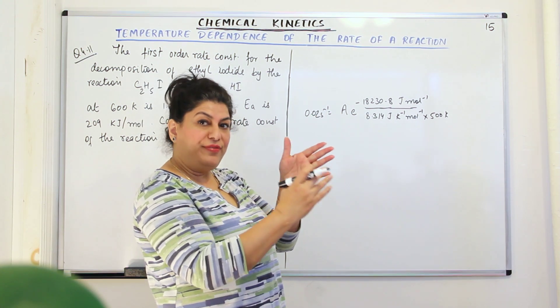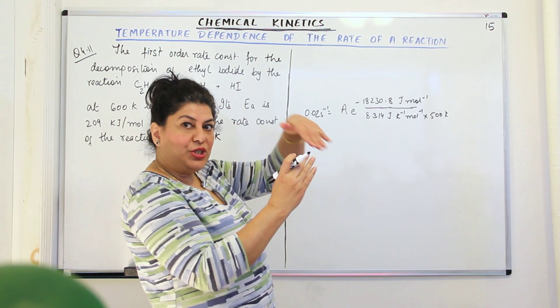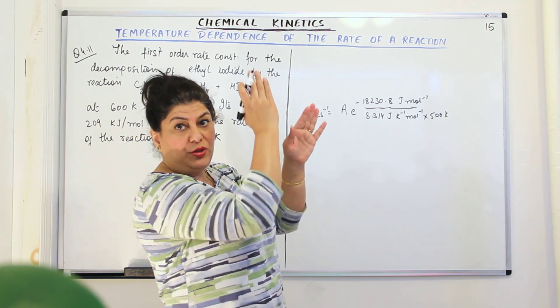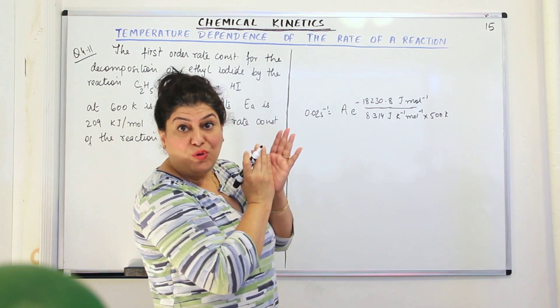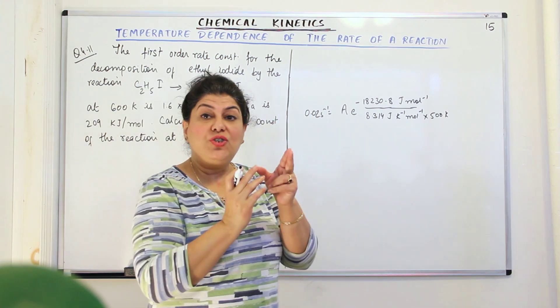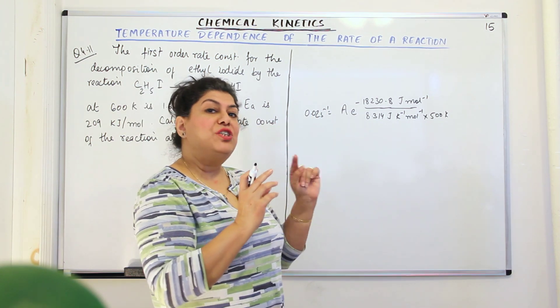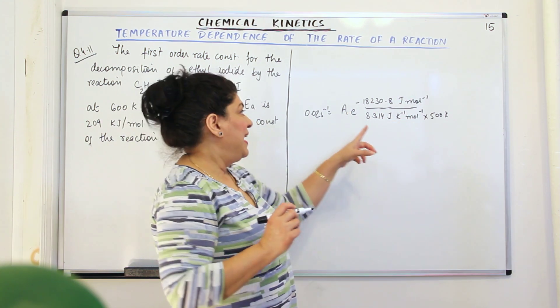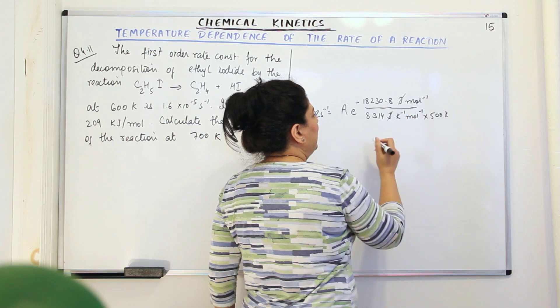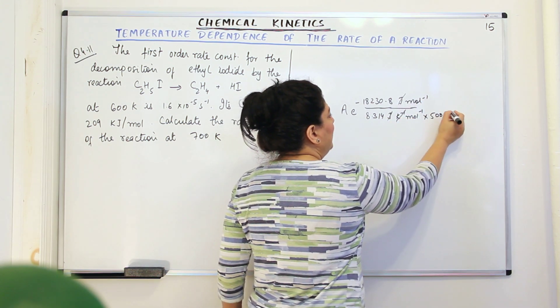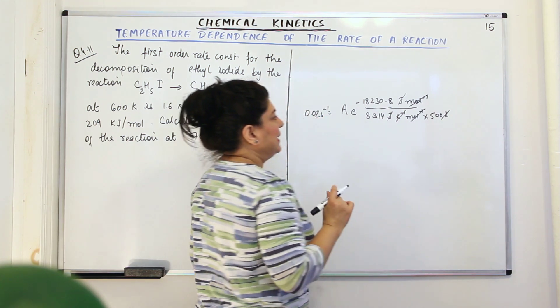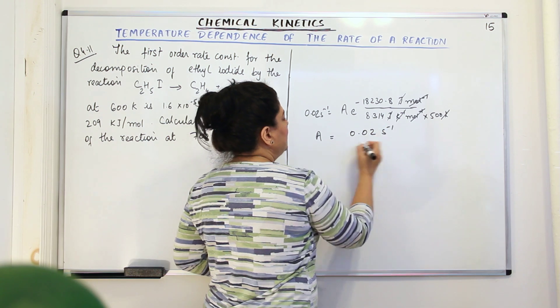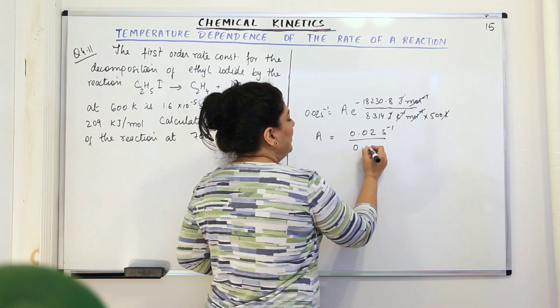But the value of A should have the units of K, because if you remember the log of A, when you plot a graph, it forms an intercept on the y-axis which has the value of K. Therefore, it should have the units also of K, which is per second. Therefore, all these units should get cancelled. Joules and Joules will get cancelled, per Kelvin and Kelvin will get cancelled, per mole and per mole will get cancelled.